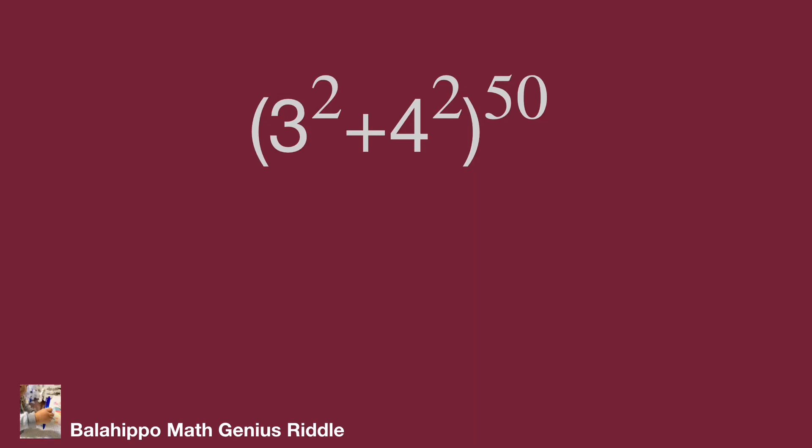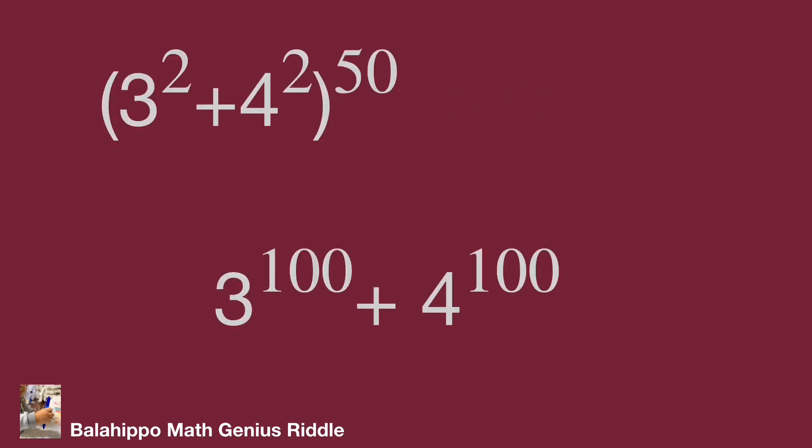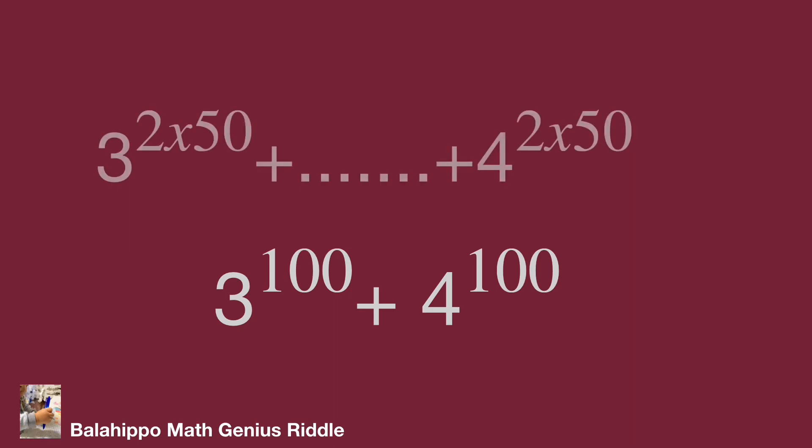Next step, let's compare with the other value 3 power of 100 plus 4 power of 100. Quantity 3 square plus 4 square power of 50, develop this product will become the first item 3 power of 2 times 50 plus dot dot dot several positive items to the last item 4 power of 2 times 50.